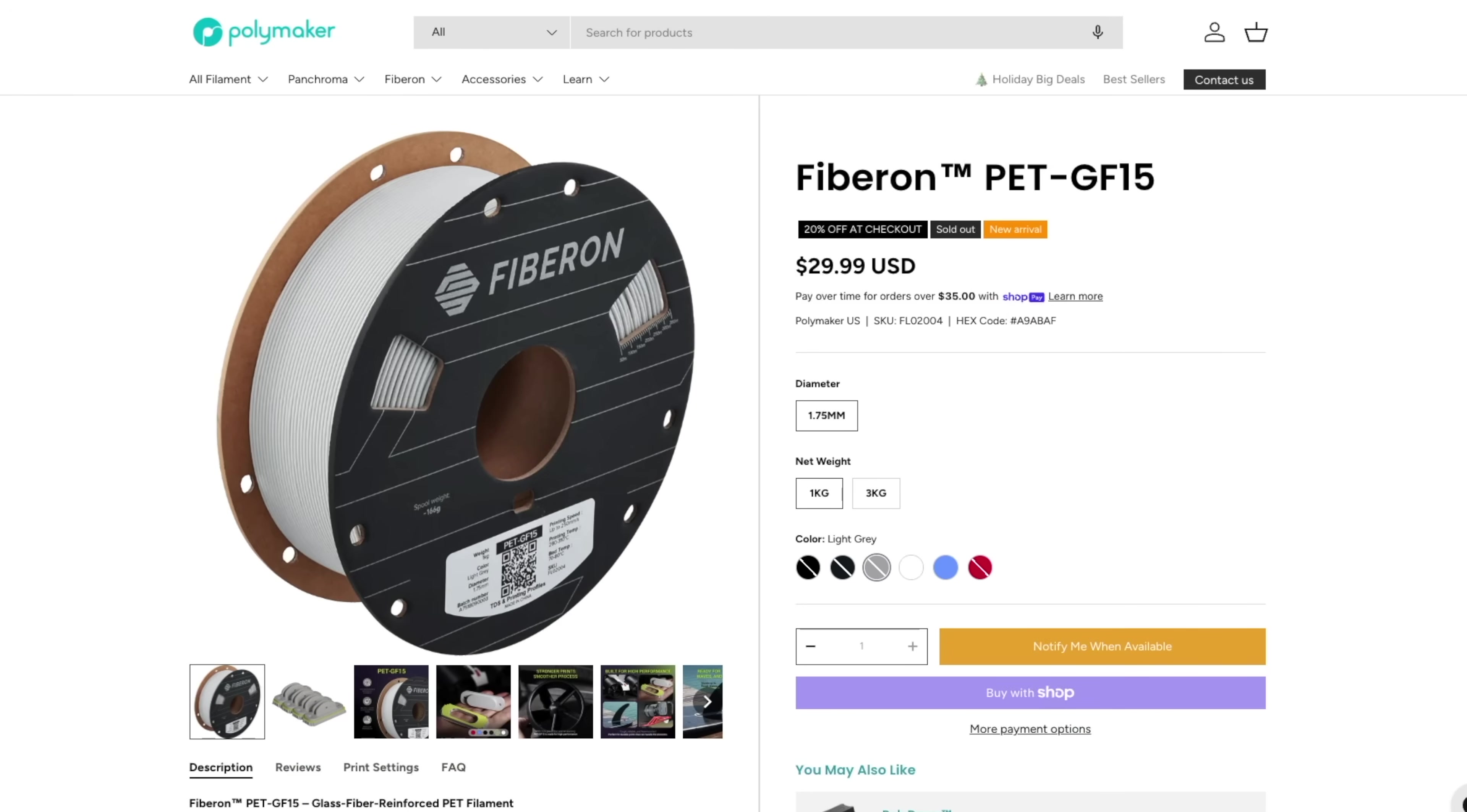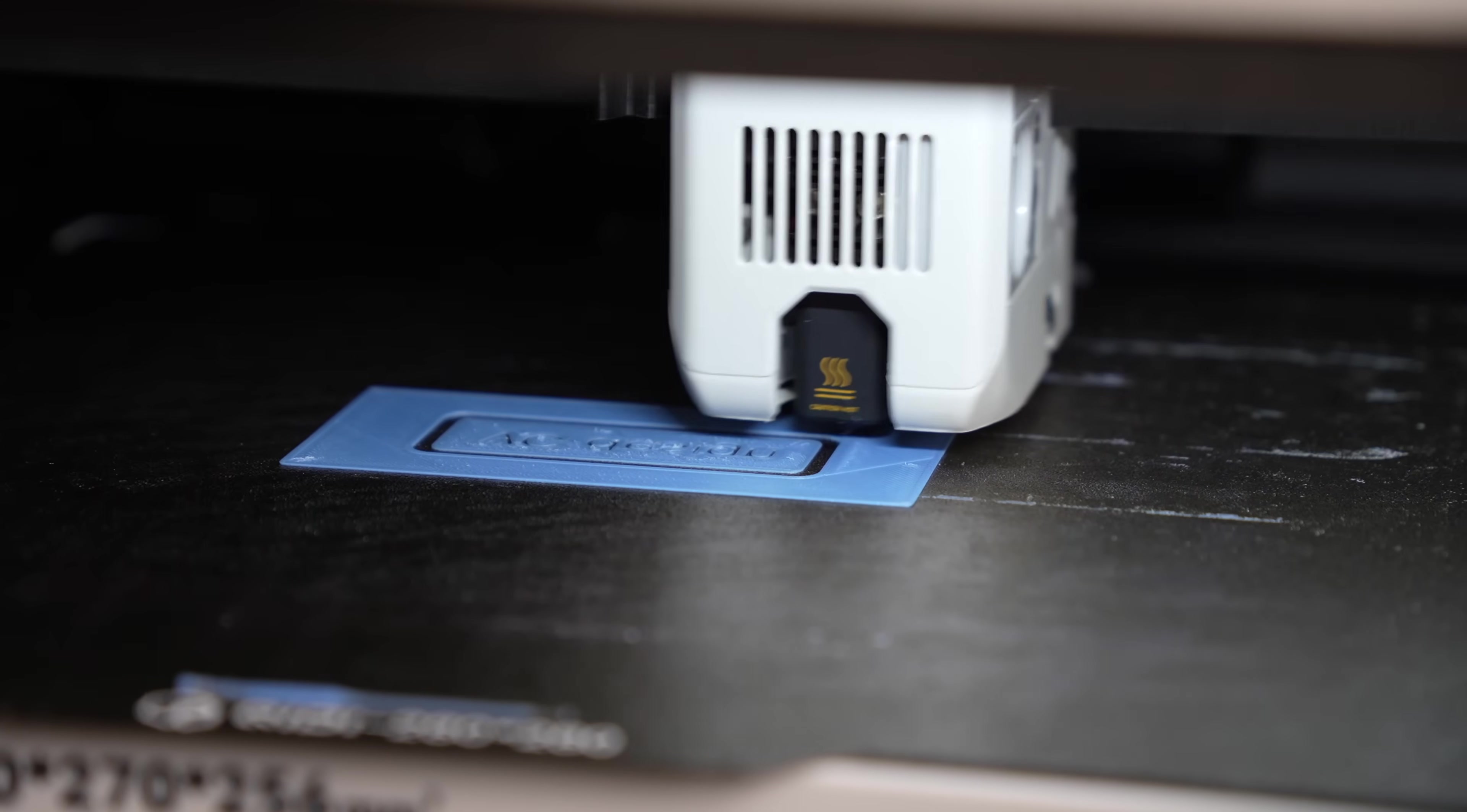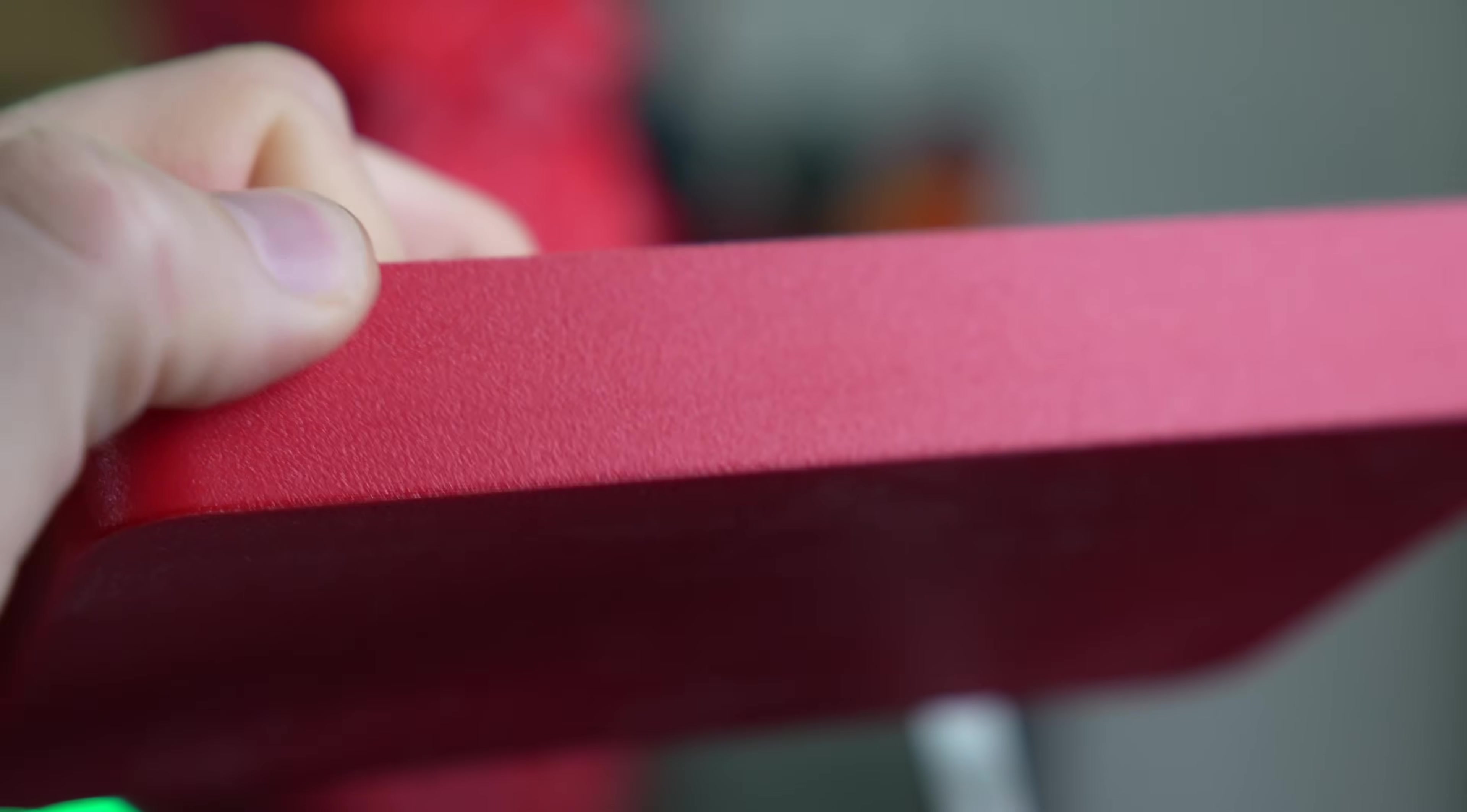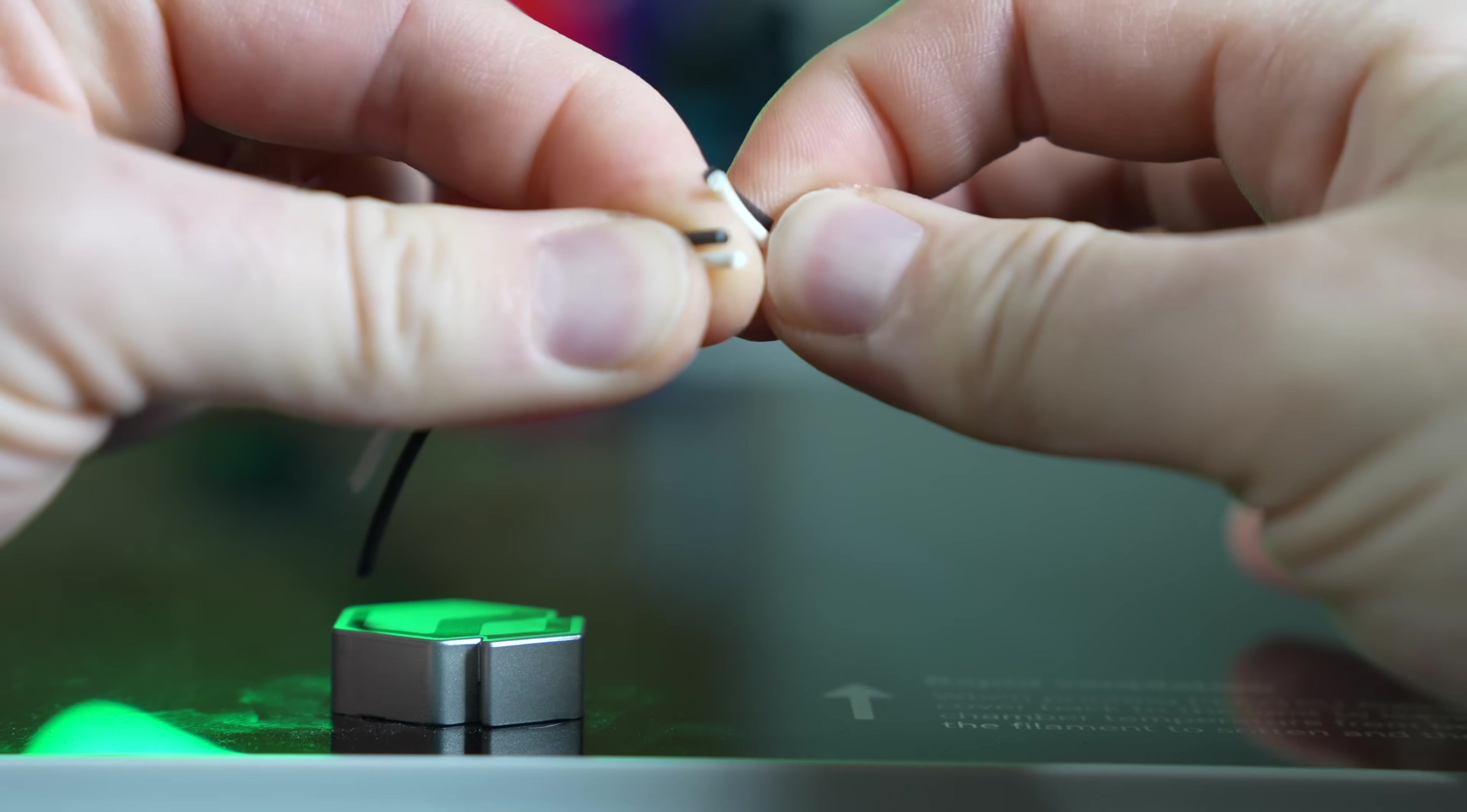Jumping over to Polymaker's Fibron PETGF-15. This is a PET filament containing 15% glass fiber. The added glass fibers increase the material's stiffness, and in my experience, makes the material as a whole easier to print with. Like other filaments containing glass or chopped carbon fiber, it creates a slightly rougher surface texture that blends layer lines and gives parts a more uniform look. Comparing this material with a PET-CF that I have, the glass makes the material stiff, but not as stiff as the chopped carbon fiber.